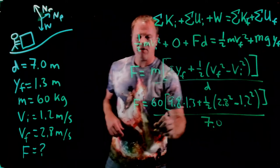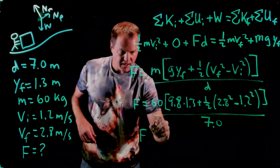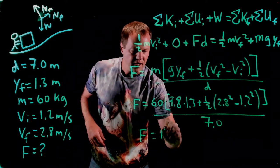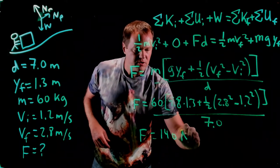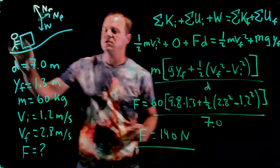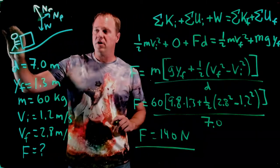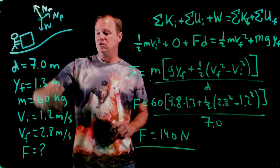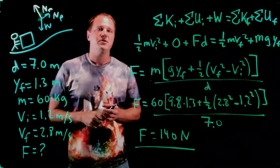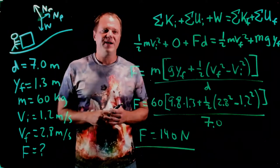And I throw that into my calculator, and it tells me that it is, rounding a little bit, 140 newtons. So that's the force that the person needs to continuously exert along the full length of the ramp in order to attain this particular velocity at the top of it. Okay, thanks for watching.